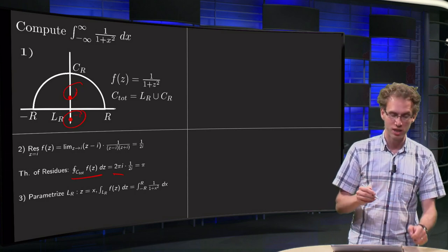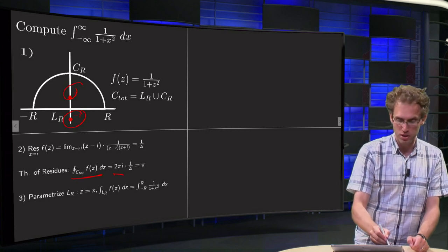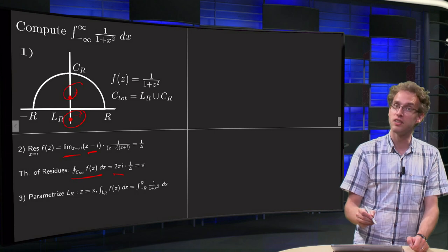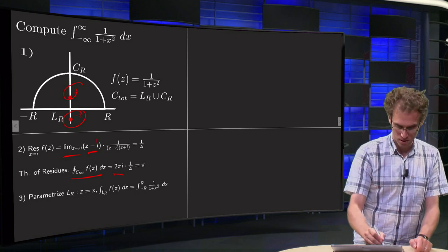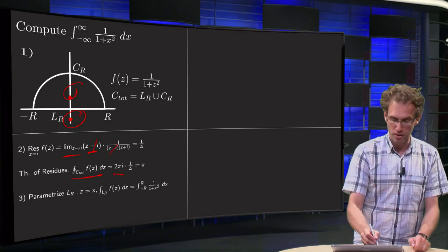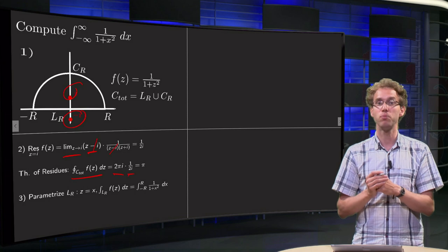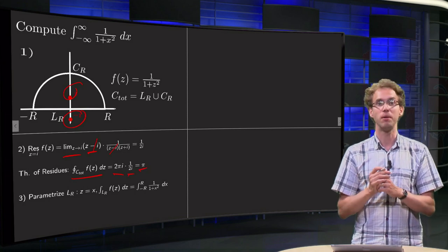Now we compute this residue at z equals i. It's a pole of order 1, so we have the limit z to i of (z minus i) times f(z). f(z) equals 1 over (z minus i) times (z plus i). Those two factors cancel out and we get 1 over 2i. We plug the residue in: 2πi over 2i equals π. End of step 2.